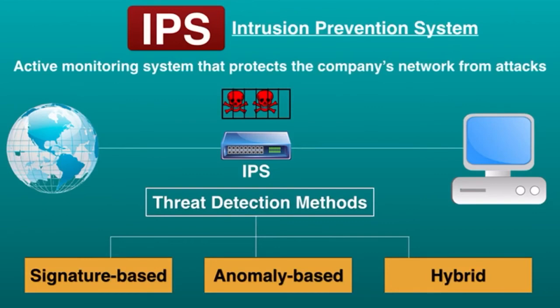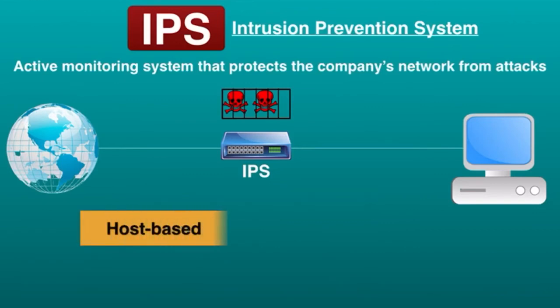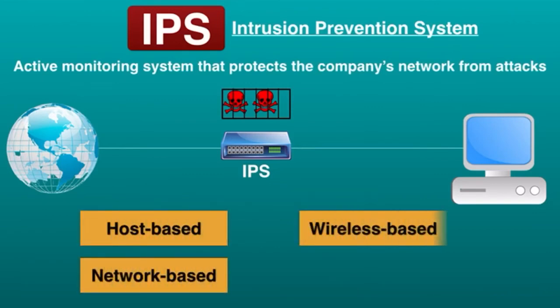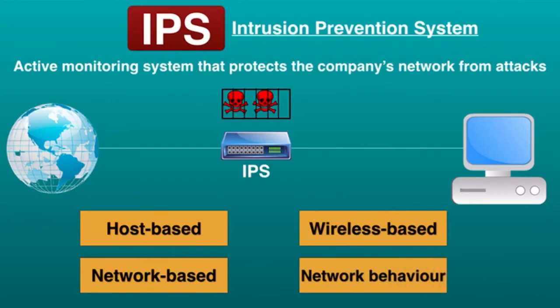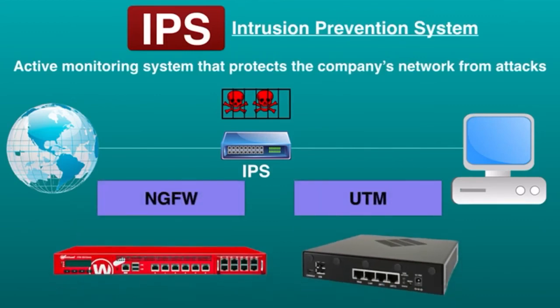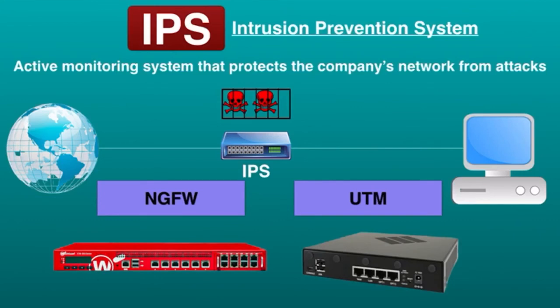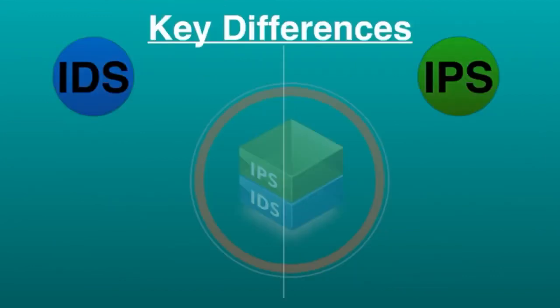Like IDS, IPS can use signature-based, anomaly-based, or hybrid threat detection methods. IPS can be host-based, network-based, wireless-based, or network behavior-based. IPS and IDS are not required to be separate devices — they can be integrated into one physical device such as Next Generation Firewalls and Unified Threat Management (UTM). UTM technology combines the functionality of both IPS and IDS into a single device.